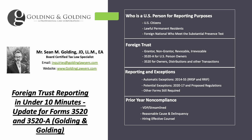Foreign trusts come in all different shapes and sizes. You have your grantor, your non-grantor, your irrevocable. Maybe it's an offshore asset protection trust. Maybe it's a charitable trust. All different types of foreign trusts have to be reported. The two main forms that have to be reported on are Form 3520-A and Form 3520. Form 3520-A is for U.S. persons who have ownership of a foreign trust. Form 3520 covers the same, but with additional requirements depending on whether you receive a trust distribution, large gift or inheritance, etc.